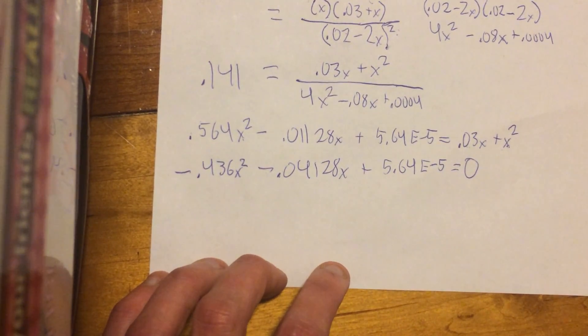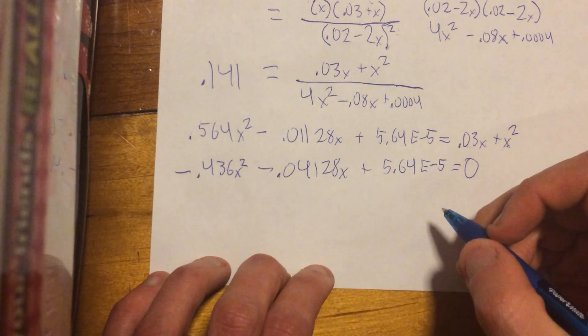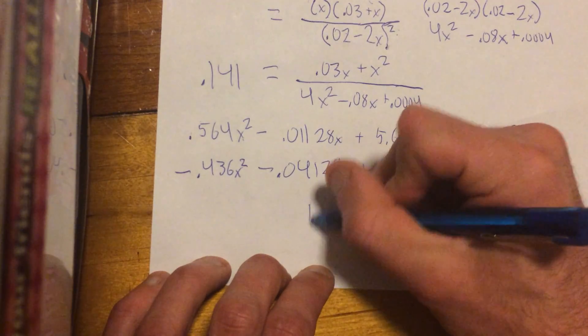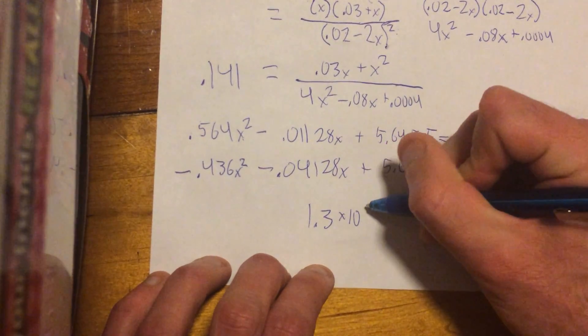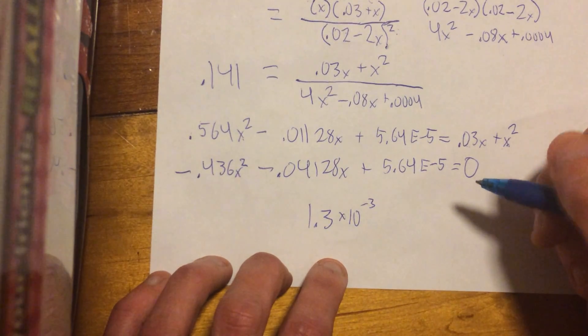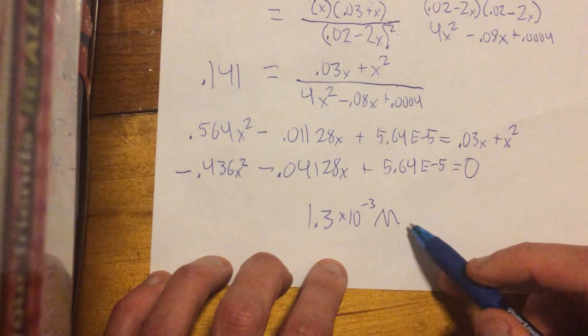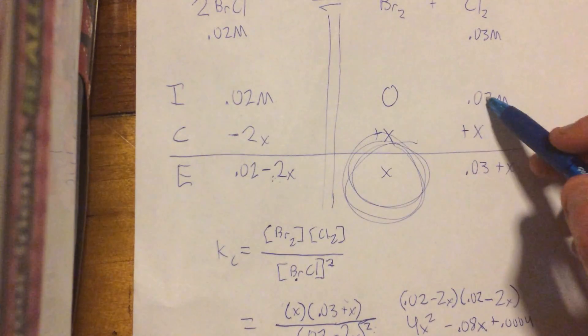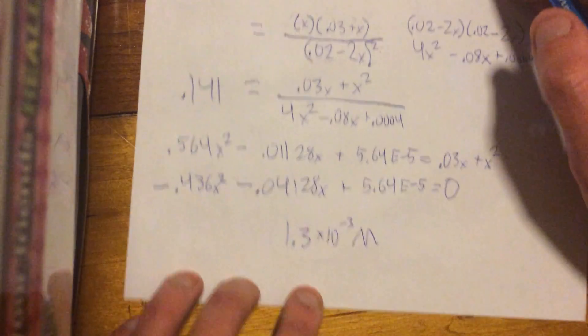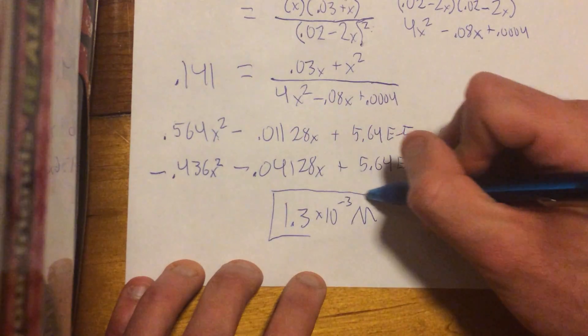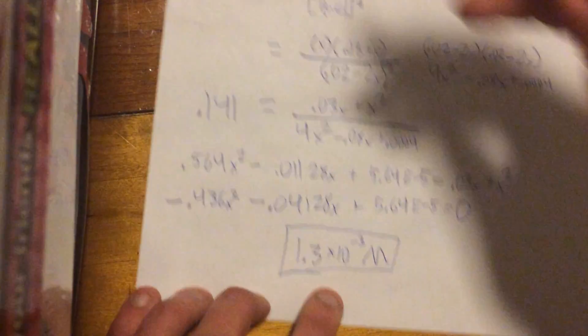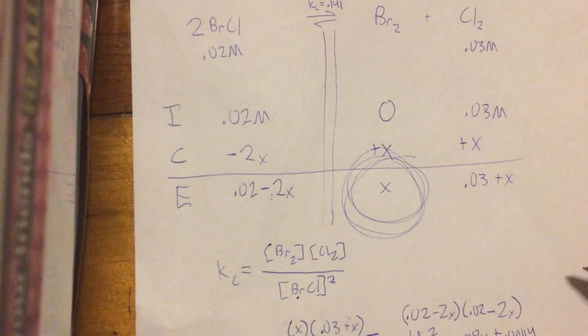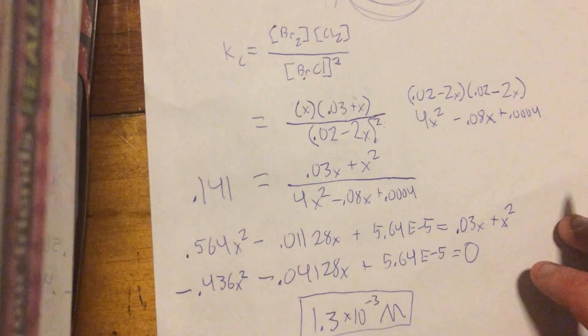All right, so what does this look like? That is right, it is a quadratic. So, I already did this, put this through the quadratic formula, and the value that makes sense is 1.3 times 10 to the negative 3. All right, and that is going to be in molarity, because up here we had molarity, molarity, x's are also in molarity, so make sure that you know what you end up in units-wise. Sometimes you can do moles in this whole ice table, but I just did molarity here.